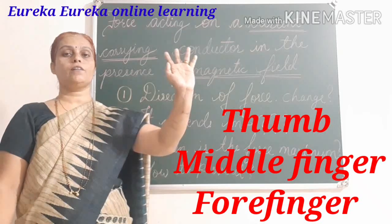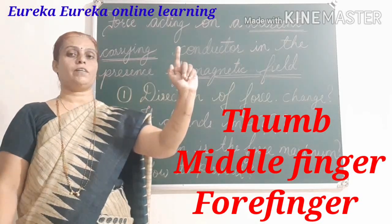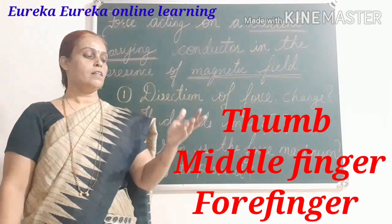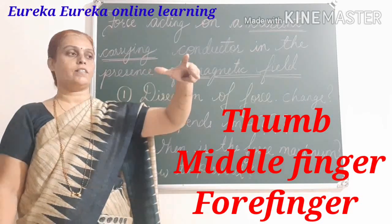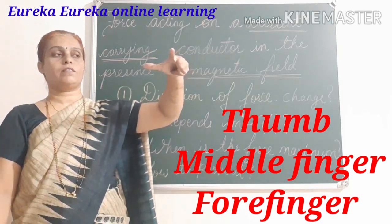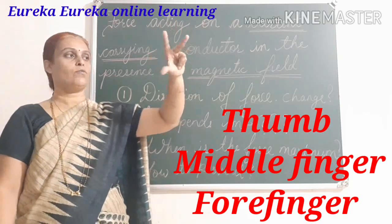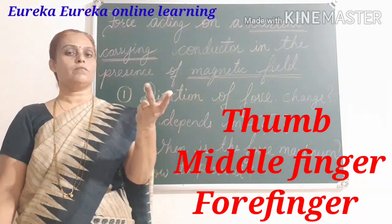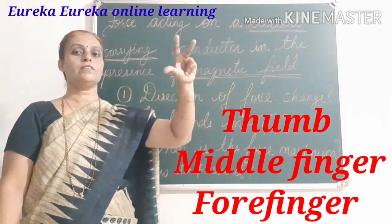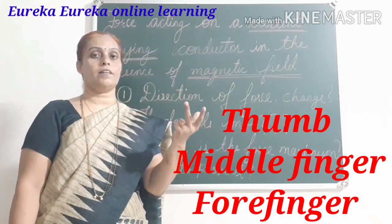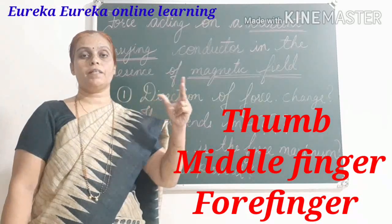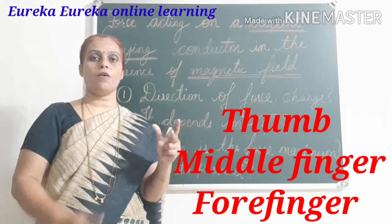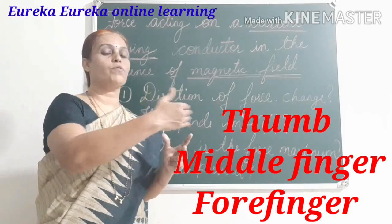If you use the left hand, this is the middle finger, this is the forefinger, and this is the thumb. The whole of Fleming's left-hand rule is based on the position of these three fingers. The arrangement of these three fingers — the magnetic field is directed from the north pole towards the south pole.